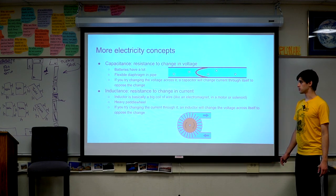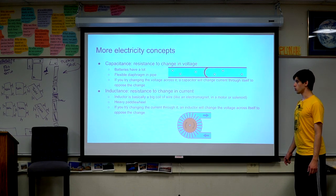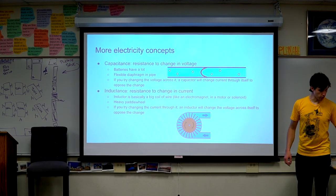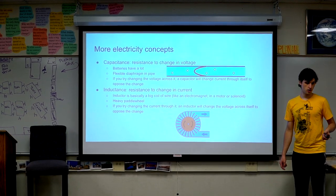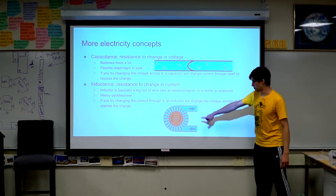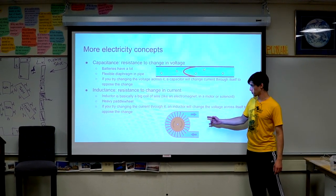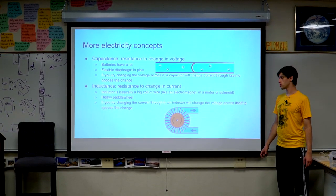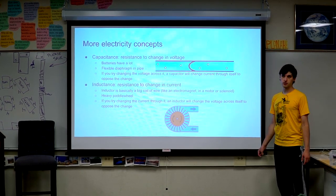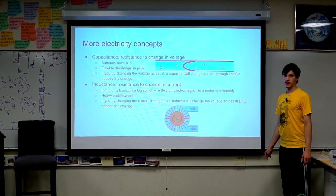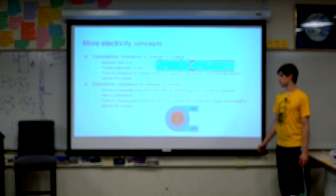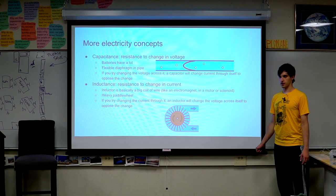Inductance is resistance to a change in current — for electrical circuits that's basically a big coil of wire. A motor has big coils of wire, as does a solenoid or electromagnet, all of which have a lot of inductance. In the water analogy it's like a big heavy paddle wheel — if you try to change the rate of water flow through it, the pressure changes to oppose that change. Capacitors and inductors are kind of opposites: a capacitor has an electric field you charge up, an inductor has a magnetic field you charge up.